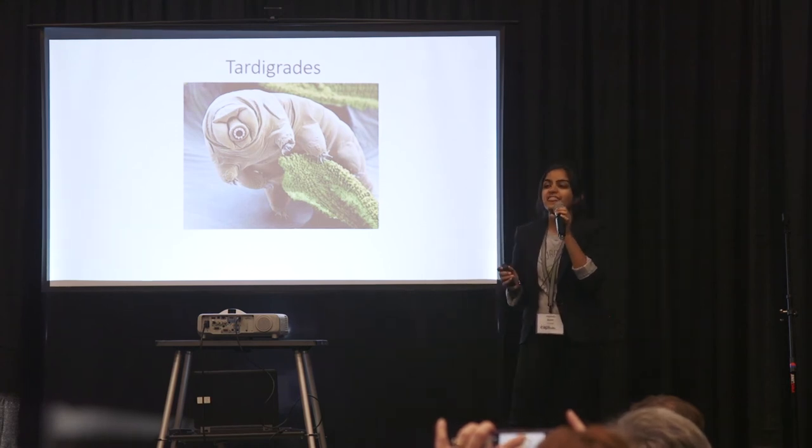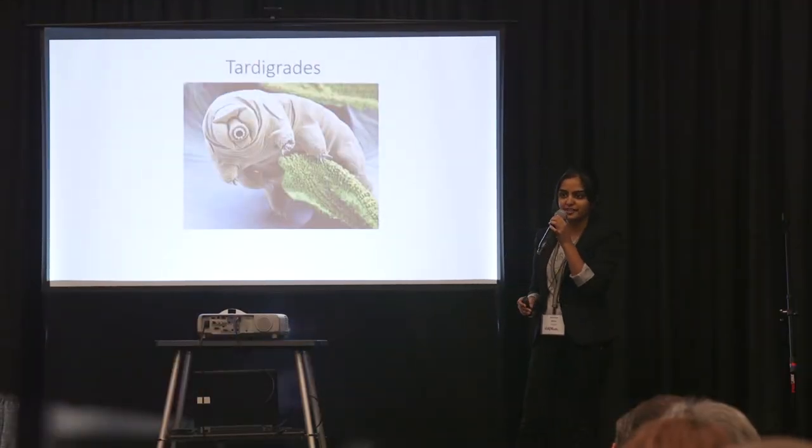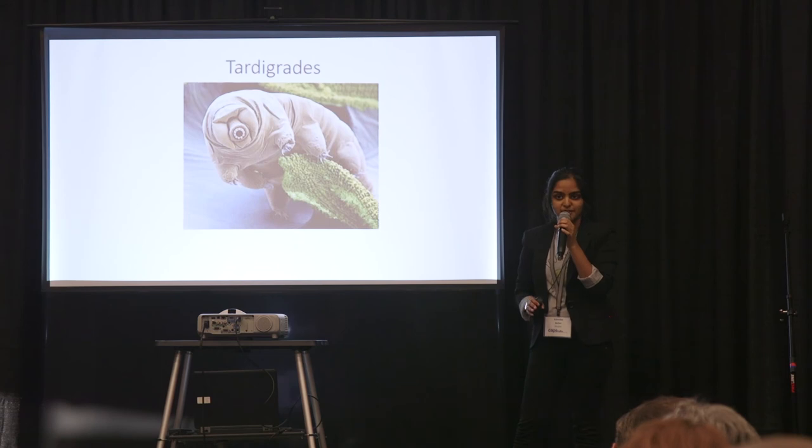And they can survive 6,000 atmospheres of pressure. To put that one in perspective a little bit, the bottom of the Mariana Trench, also known as the lowest known point on Earth, only experiences 1,000 atmospheres of pressure.